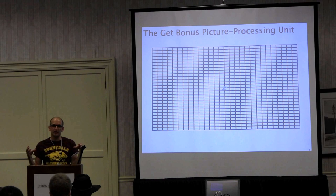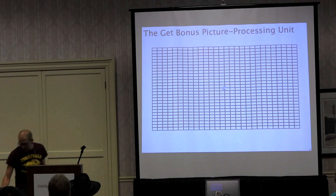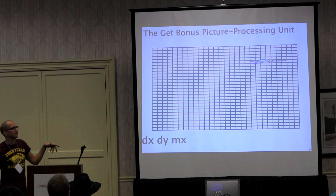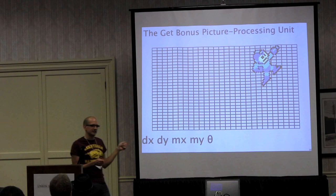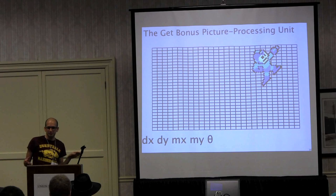The Super Nintendo had very tight constraints for how many sprites it could show and what could happen to them. It would let you move them left and right, up and down, magnify in X and Y, and rotate — but only for some small set of sprites. The GetBonus graphics engine lets you do all of those things for as many sprites as you want.